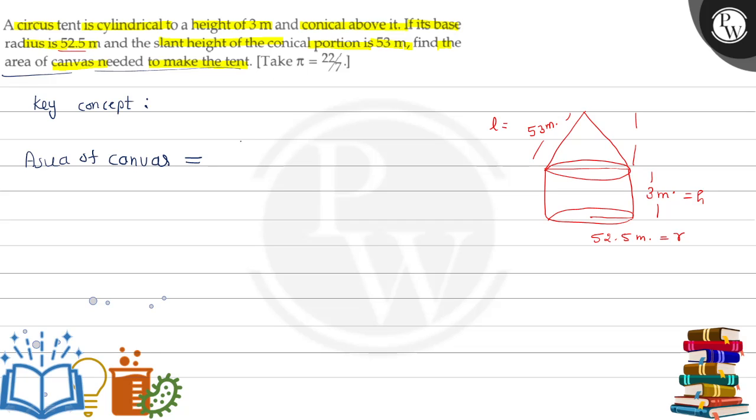Area of canvas equals the curved surface area of the tent, which is the curved surface area of the cone plus the curved surface area of the cylinder.